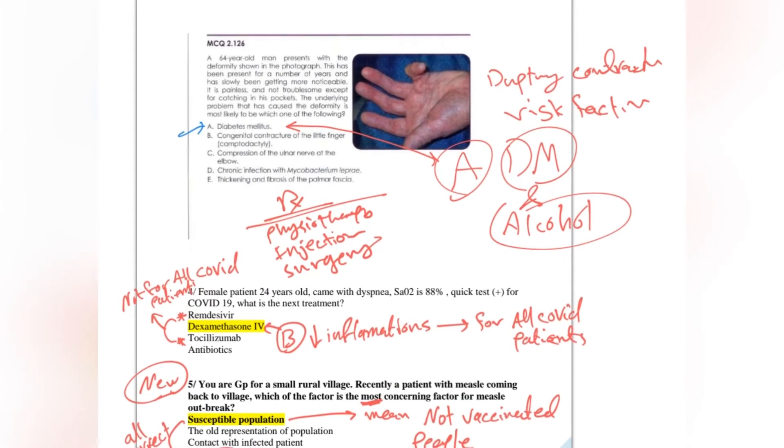Treatment for Dupuytren contracture: first is physiotherapy, then injection of steroid, and then surgery.